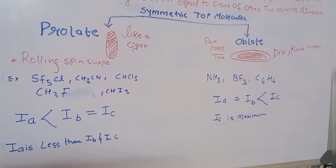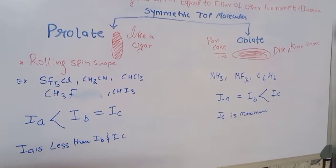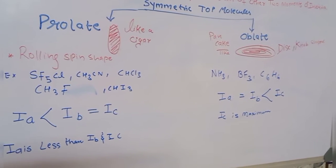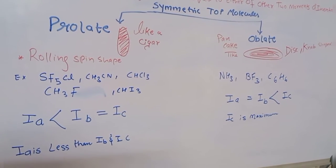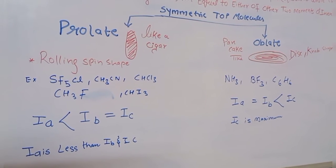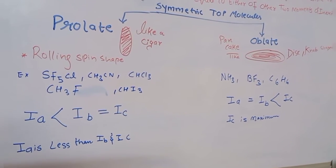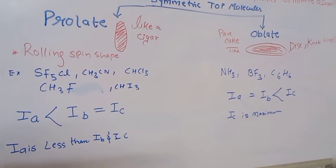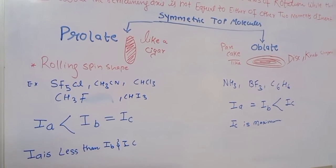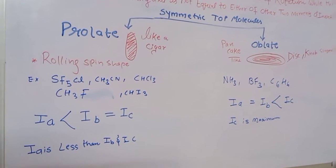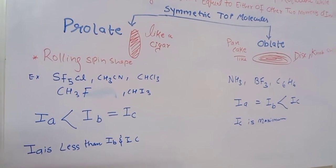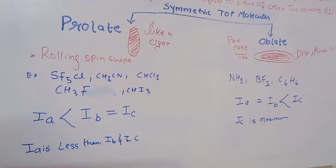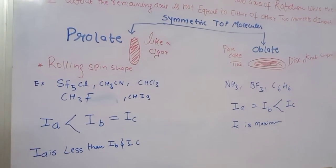Prolate symmetric top molecules have an elongated, cigar-like shape (also called rolling-spin shape). Examples include SF5Cl, CH3CN, CHCl3, CH3F, and methyl halides like CH3I. The condition is Ia < Ib = Ic — one smaller moment of inertia along the symmetry axis, and two equal larger moments of inertia.